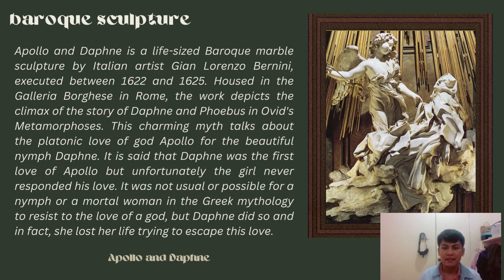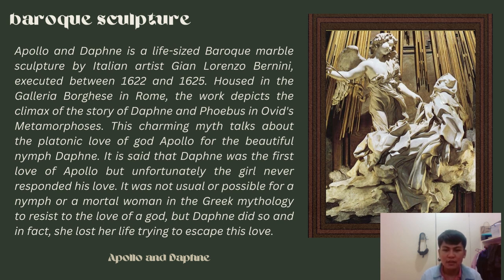Apollo and the Pinna is a life-size baroque marble sculpture by Italian artist Gian Lorenzo Bernini, executed between 1622 and 1625, housed in the Galleria Borghese in Rome. The work depicts the climax of the story in Ovid's Metamorphosis. The myth describes the platonic love of the god Apollo for the beautiful nymph Pinna. It is said she was Apollo's first love, but she never returned his love. It was unusual for a mortal woman in Greek mythology to resist a god's love, but Pinna did, and she lost her life trying to escape.